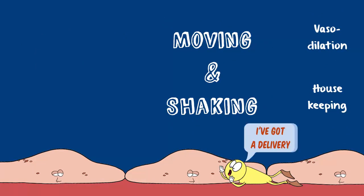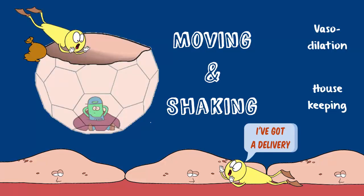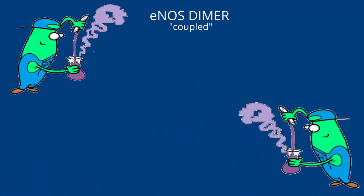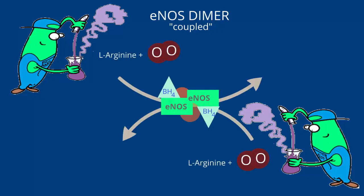ENOS is always sitting on the surface of the cells that line the blood vessels. He typically just hangs out in the caveoli, attached to a very fancy comfy chair called caveolin-1. When he gets the nod from insulin via calmodulin, he hops off the scaffold protein and hooks up with a partner. Together, they grab electrons from NADPH, pass them to arginine, to create nitric oxide and citrulline. The nitric oxide then diffuses through the membrane to do its thing.